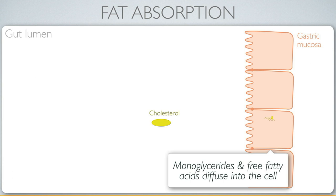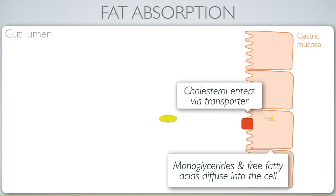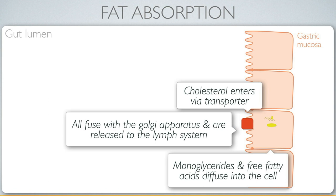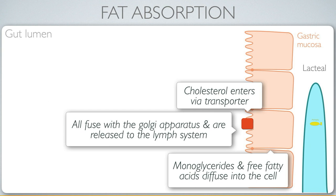Cholesterol requires specific transporters and can also enter the interior of the cell. Once inside, fats are handled differently from carbohydrates and proteins — they fuse with the Golgi apparatus, are transported across the cell, released into the interstitial space, and make their way into the lymphatic vessels called lacteals.